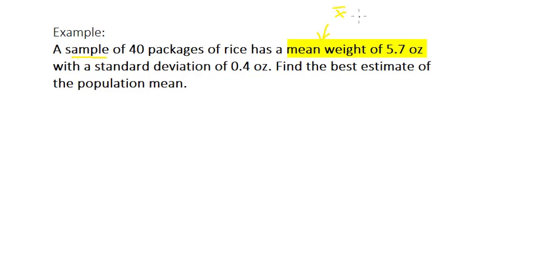And the sample mean x̄ is the best point estimate of the population mean. So in this simple example, the best estimate of the population mean is that sample mean, which is 5.7 ounces.